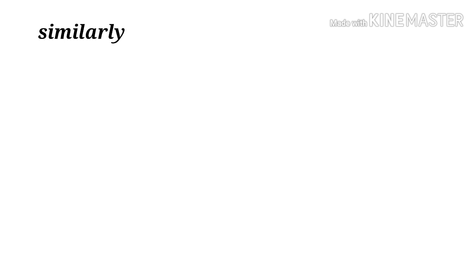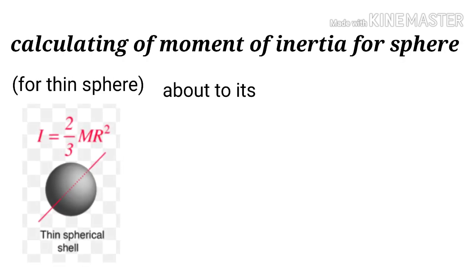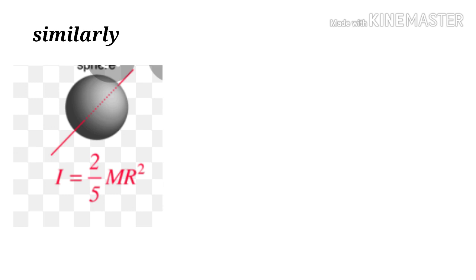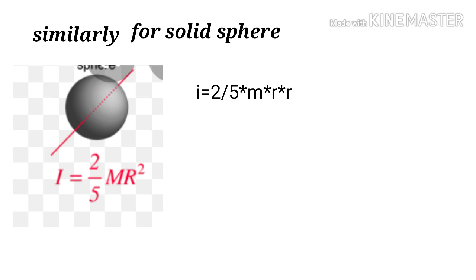The moment of inertia for a thin spherical shell about any diameter is I equal to 2 by 3 into M r squared, where M is the mass and r is the radius. Similarly, the moment of inertia for a solid sphere is I equals 2 by 5 M r squared.